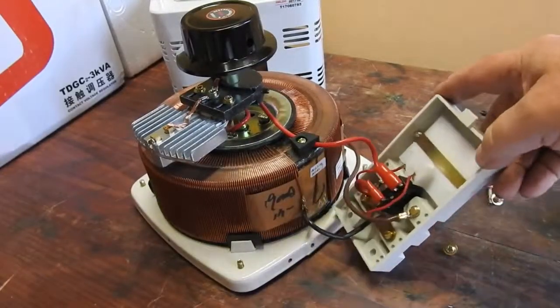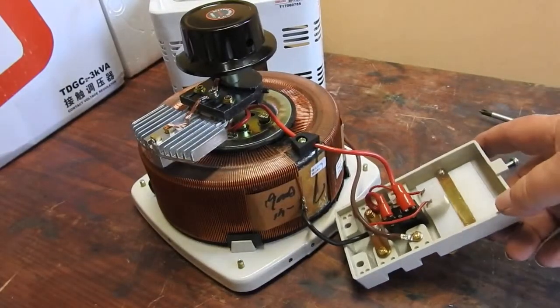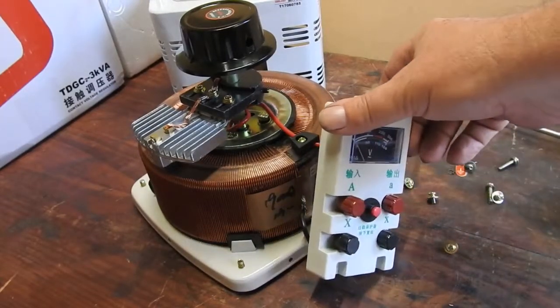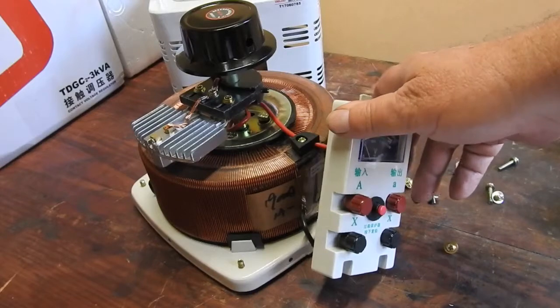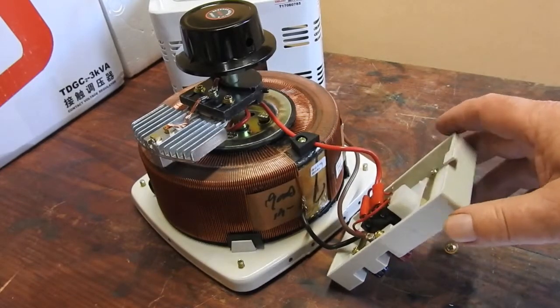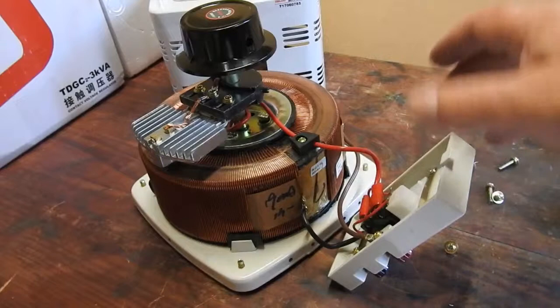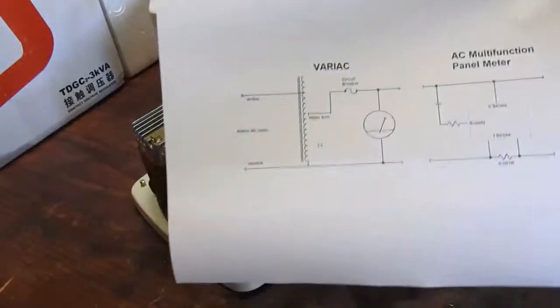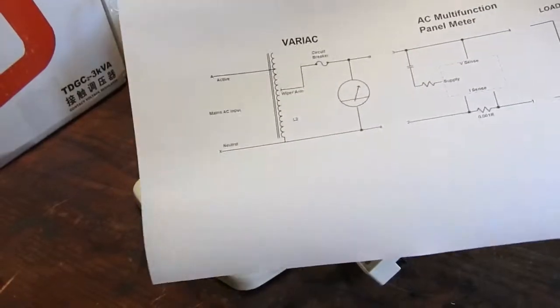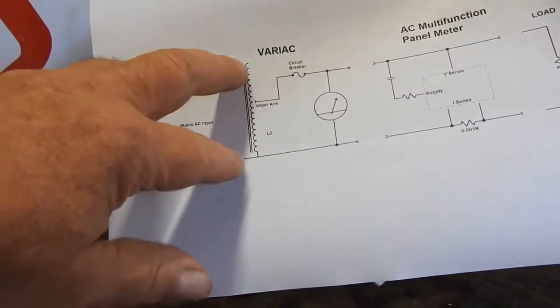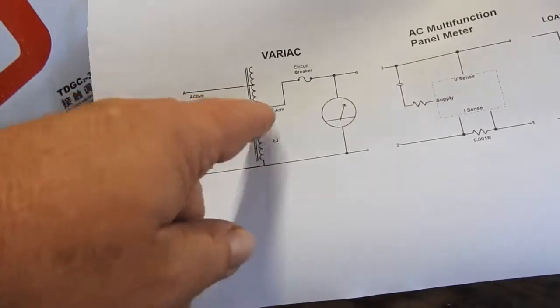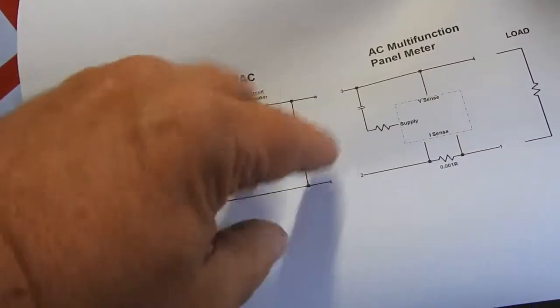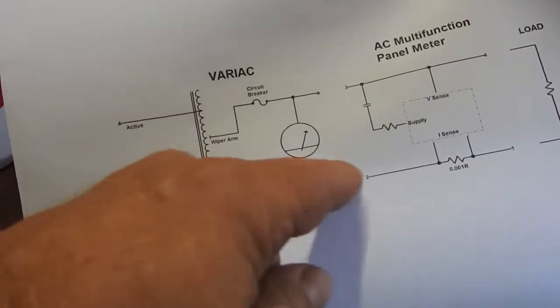So, here it is. It's simpler than some other Variacs because it doesn't have a power switch. It doesn't have input cord and output sockets, and their associated wiring. So, it's very straightforward. AC comes in to the main winding. The wiper arm comes off through a circuit breaker to the voltmeter to the output with a common neutral rail.